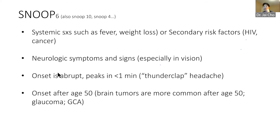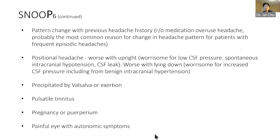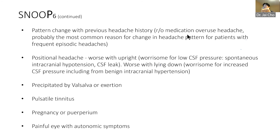In SNOOP, the O stands for onset — headache that peaks in one minute is the thunderclap headache. Also concerning is onset after age 50, since brain tumors are much more common then. The second O covers change from previous headache pattern — change in frequency, character, or things like that.